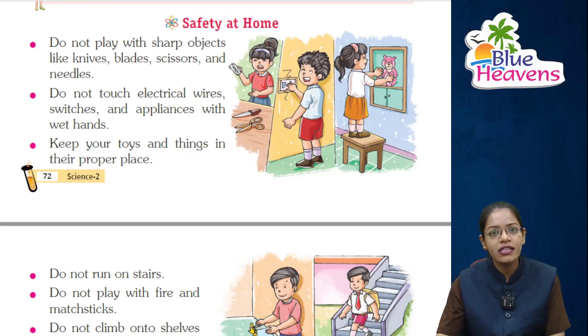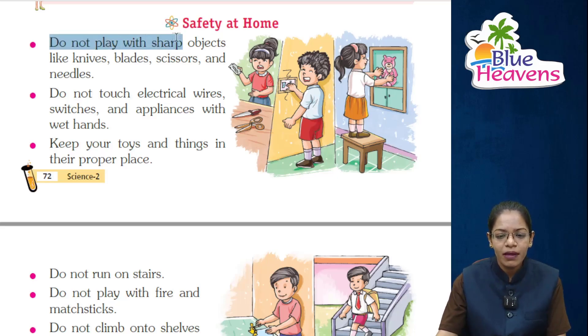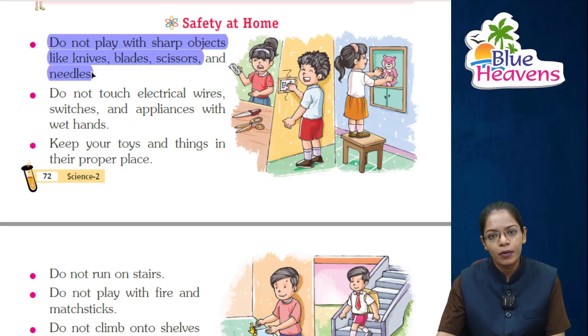Next is safety at home — what safety rules we should follow when we are at home. First point: do not play with sharp objects like knife, blade, scissors, and needles. Never play with sharp objects that can cause bleeding.